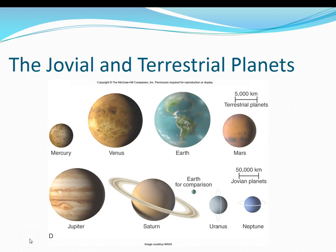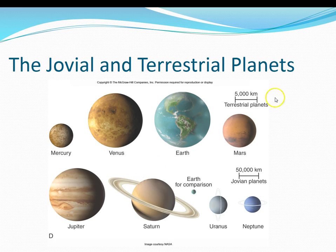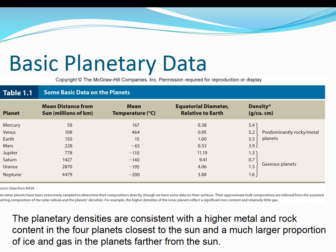Let's compare the sizes of the Jovian versus terrestrial planets. The scale for terrestrial planets here is equivalent to 5,000 kilometers — you can see their approximate dimensions. For the Jovian planets, the scale is 50,000 kilometers, not 5,000. So you can see that these are giant in size compared to our inner planets. Table 1.1 lists basic planetary data. The densities of the inner planets are greater than those of the outer planets — heavier materials stay closer to the Sun, while lighter material was blown away. Temperatures and distances from the Sun are also listed.